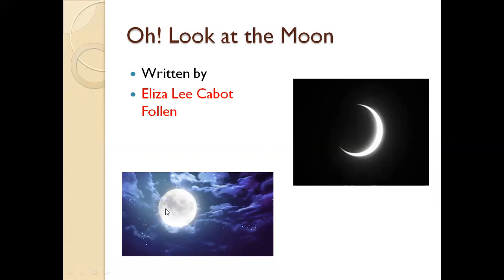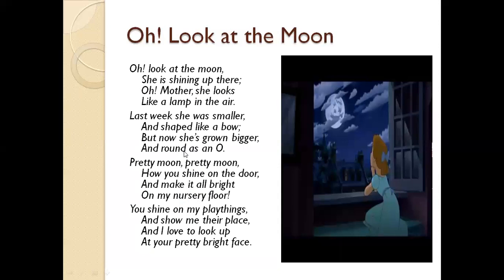So what the poet is seeing, she is telling her mother how the moon changes its shape. Now let us read the poem and see what the poet wants to tell us. 'Look at the moon, she is shining up there.'